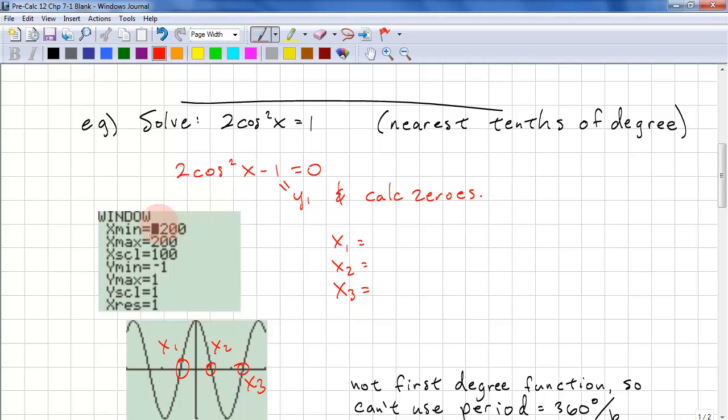It's important to set your window properly. If you're going to use degrees, you've got to make sure that you have enough to see a cycle. So negative 200 and 200 is enough. That will let us see slightly more than one cycle.